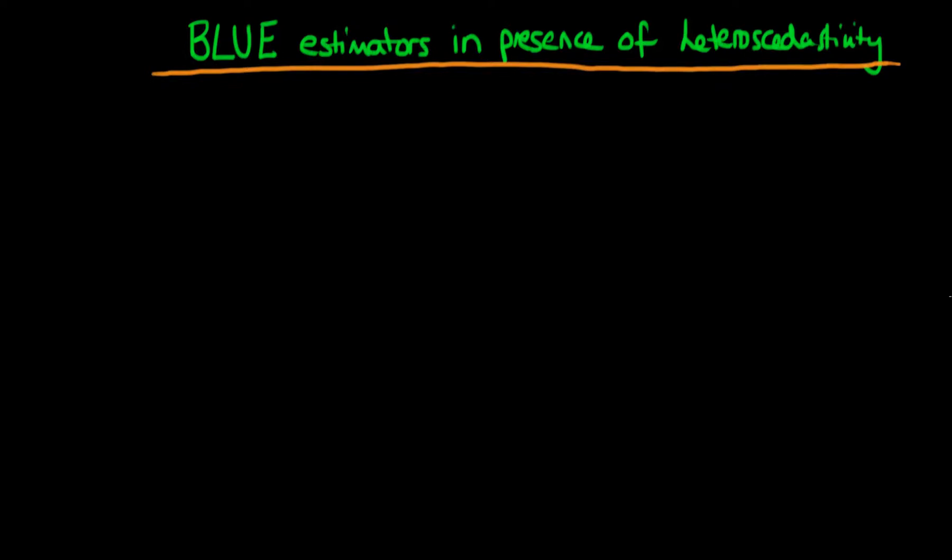In this video I want to start to talk about how we can actually derive BLUE estimators in the presence of heteroskedasticity, and those BLUE estimators actually happen to be GLS.